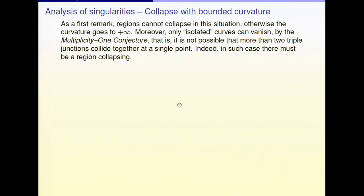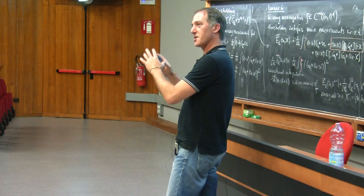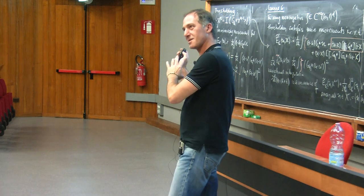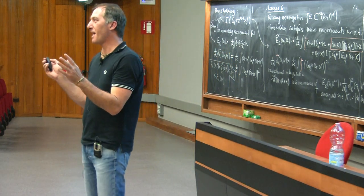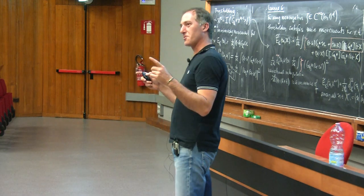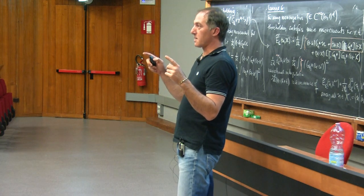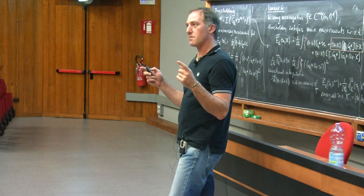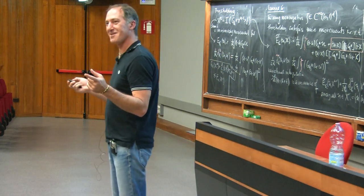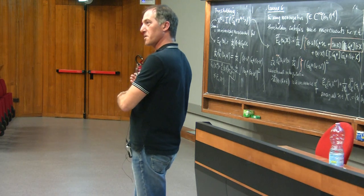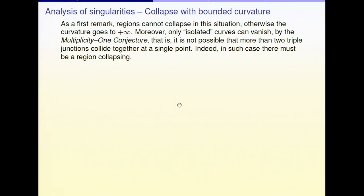This is absolutely a non-elementary lemma in general. In general, we don't have a proof of this outside the world of moving networks. If you find a proof — a bound from below on the area for regions with five angles of 120 degrees and the curvature bounded above — I would be very interested. But in the case of networks, you are in a very special situation and you can prove that if a region is collapsing, the curvature is going to plus infinity.